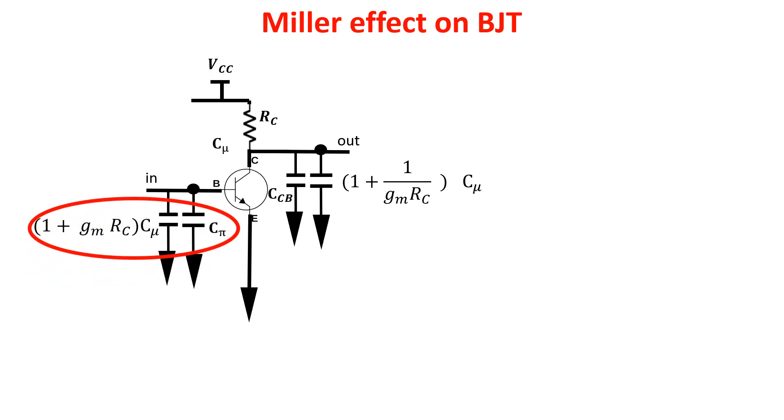We say that this is an approximation because, for example, the gain GM·RC changes with frequency, so it is not always constant, and also because we create two capacitances where there was one. So in some cases we create a new pole.